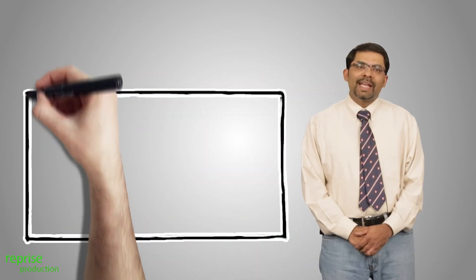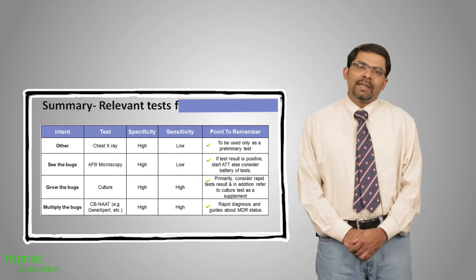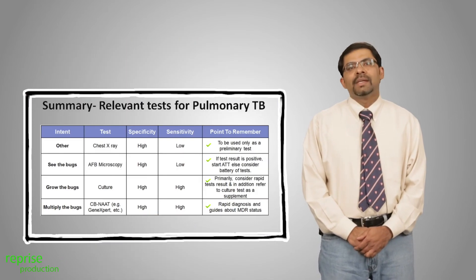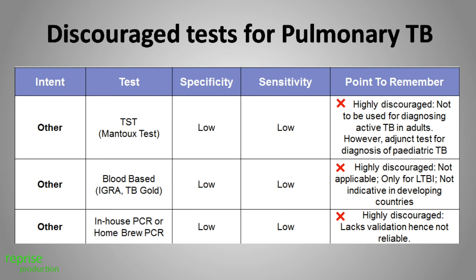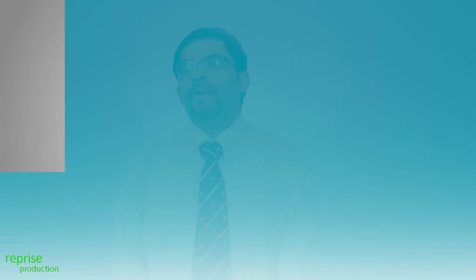What about interferon gamma release assays on blood? As already mentioned, these tests like interferon gamma TB gold were really designed for latent TB. So even if it is positive, it does not necessarily mean the positivity is because of the pleural effusion — it could be because somebody is already infected by MTB and is latently infected. Therefore, there is really no clear utility for TB gold or for the Mantoux skin test in pleural effusion.